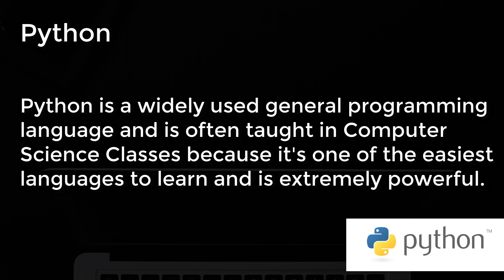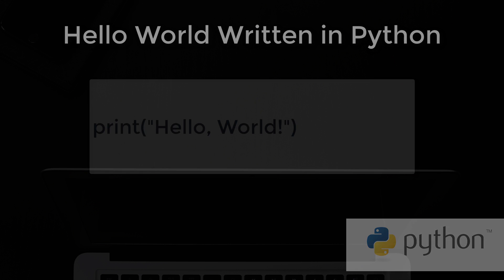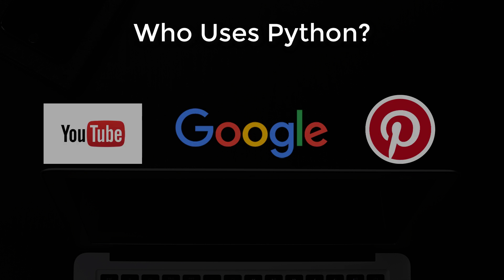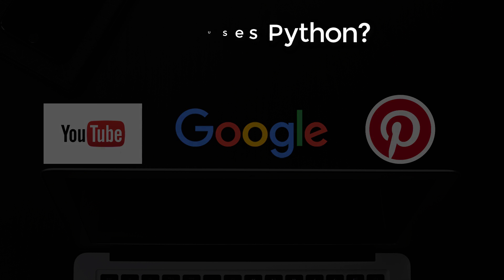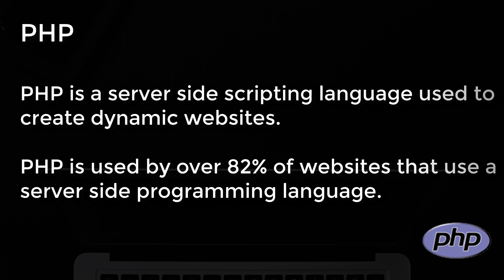Number 4: Python. Python is a widely used general programming language and is often taught in computer science classes because it's one of the easiest languages to learn and is extremely powerful. This is how you write hello world in Python, and here are just a few of the companies that use it.